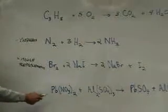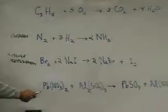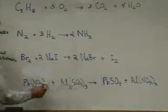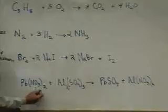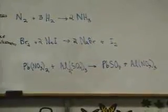Finally, the last reaction, you'll notice it looks like everybody switched partners. The lead was with nitrate, the aluminum was with sulfate, and now the lead goes off with the sulfate here, the aluminum goes off with the nitrate, and so that's a double replacement.